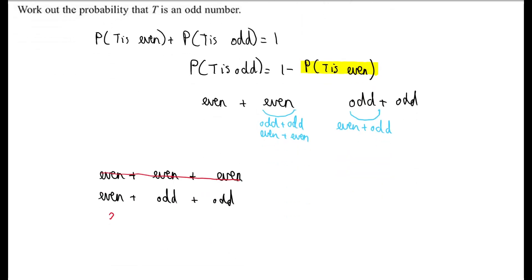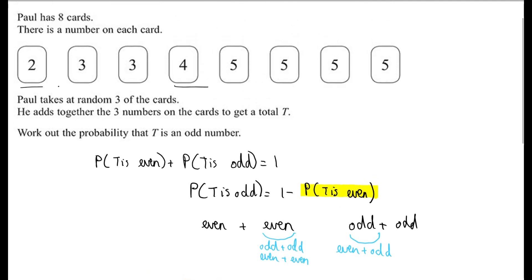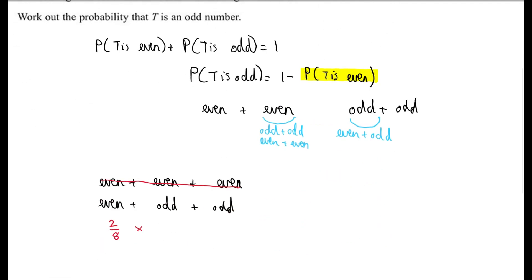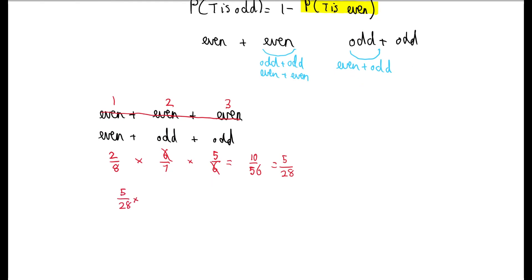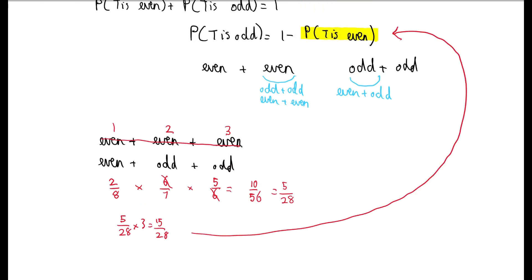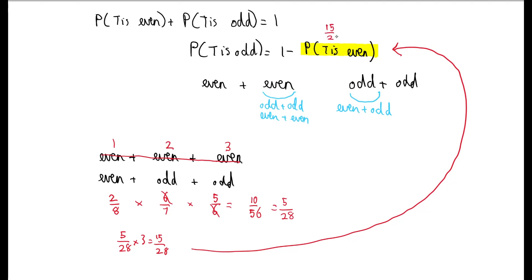The probability of getting an even on the first pick: we've got 2 evens out of 8 numbers, so that's 2 over 8. Then we have 7 numbers left with 6 being odd, so the probability of an odd is 6 over 7. The probability of another odd is 5 over 6. Multiplying out and crossing out the sixes gives 10 over 56, or 5 over 28. The even could be in 3 possible positions, so we multiply by 3 to get 15 over 28 — the probability that t is even. Therefore, the probability that t is odd is 1 minus 15 over 28, which is 13 over 28.